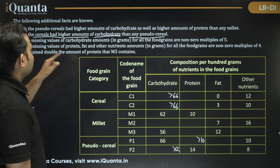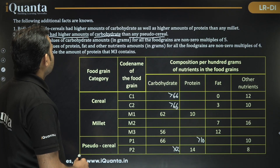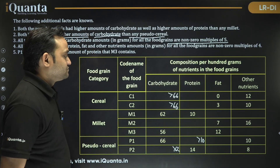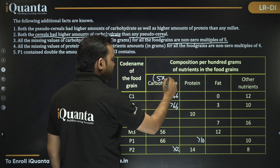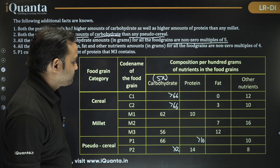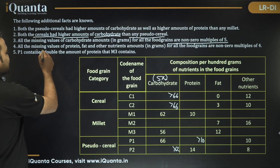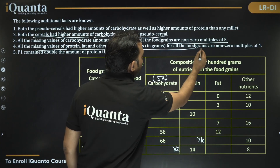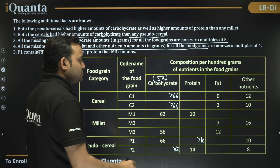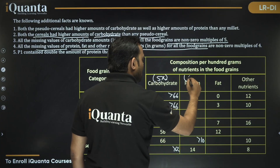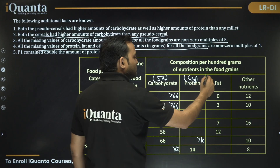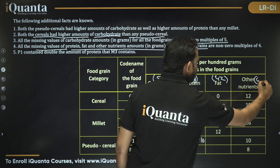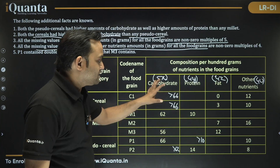Clue 3: All missing carbohydrate values are non-zero multiples of 5. Clue 4: All missing values for protein, fat, and other nutrients are non-zero multiples of 4. We'll use these constraints while filling the table.